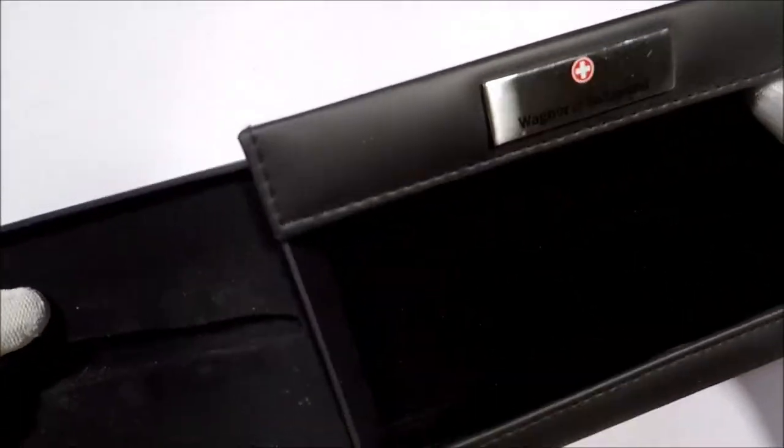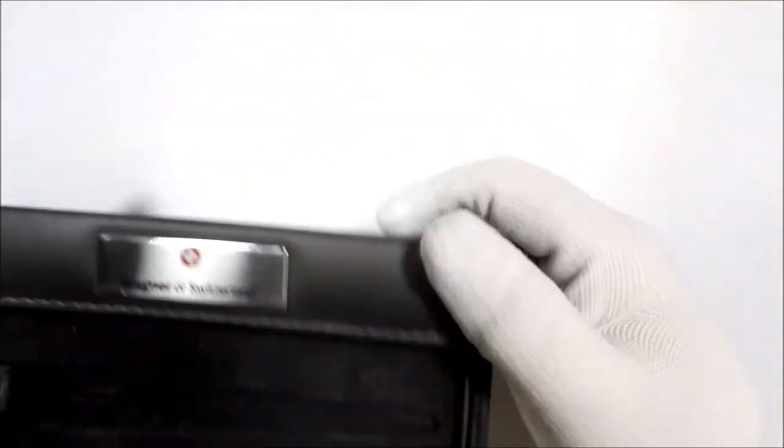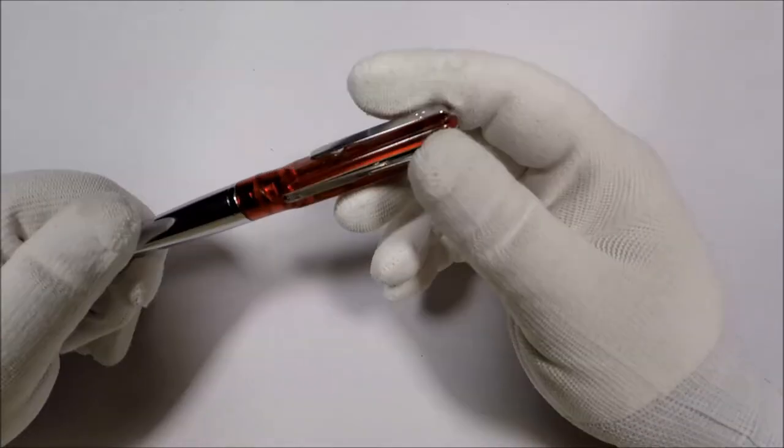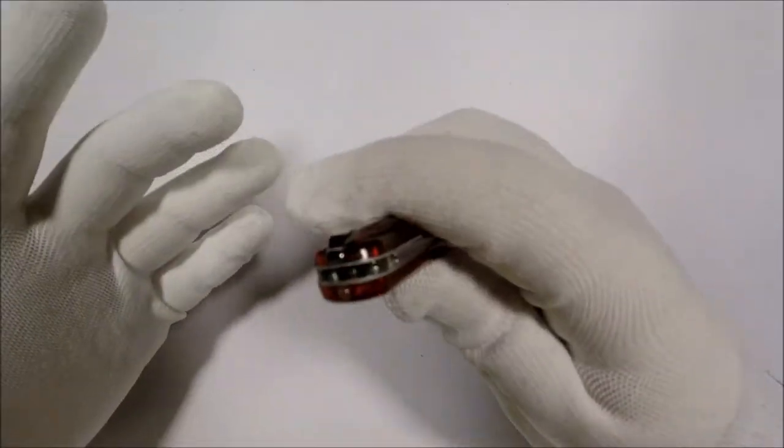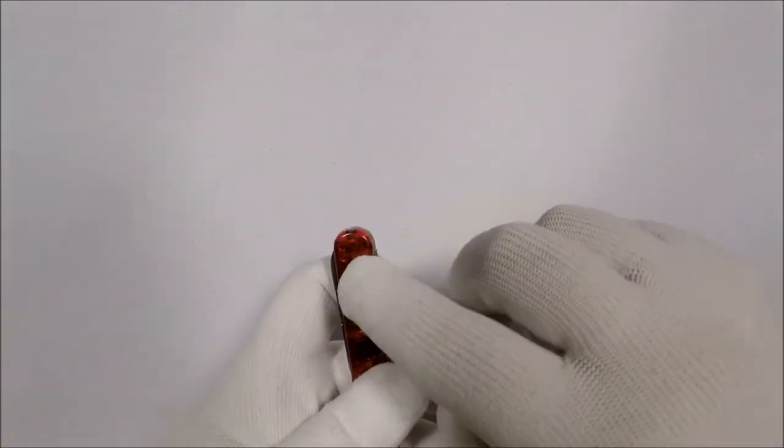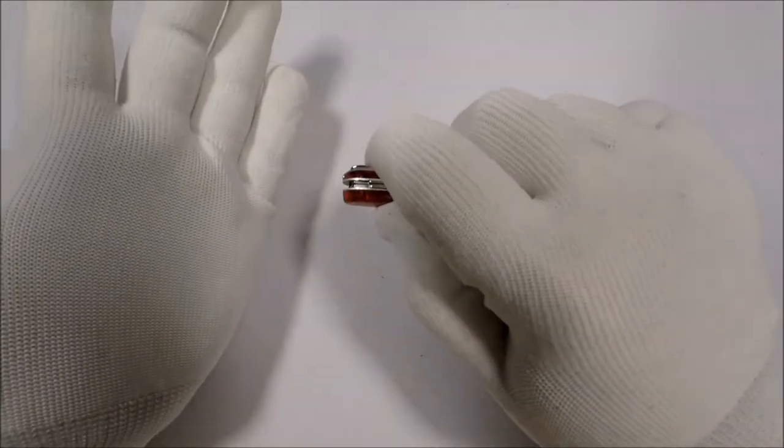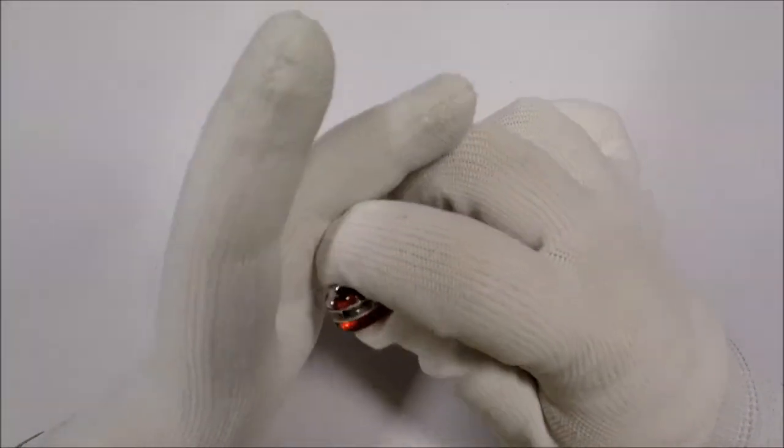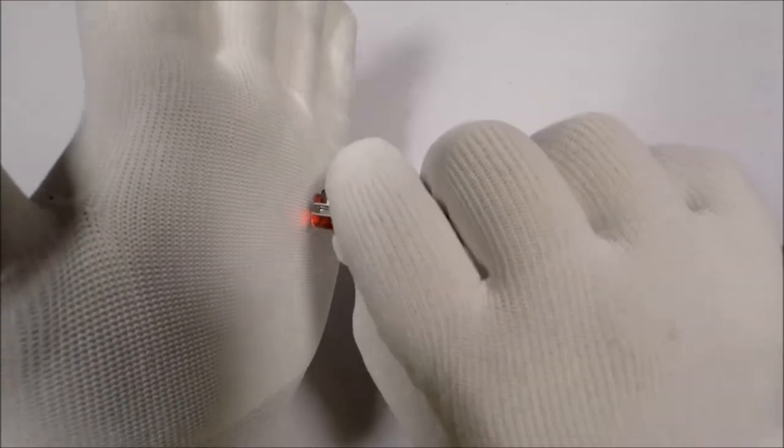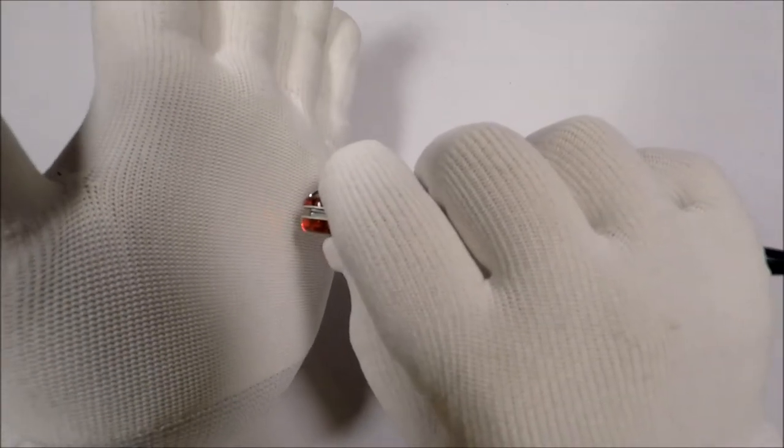So the Wagner of Switzerland pen with Victorinox parts, not Wenger parts. So stuff about this. First of all, you've got a light here. If you push down the little Swiss Army symbol, you get a light. There's a little bitty light right there.